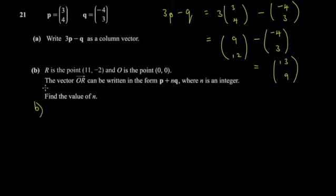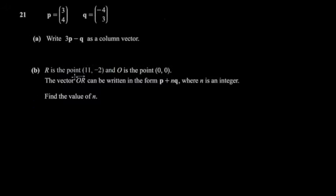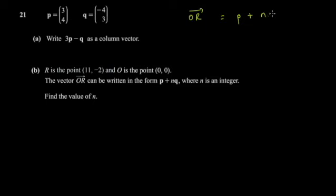For part B, we're not told a specific value, so let's clear the space. Here we have a point R, and the vector OR can be written in a form involving an integer n. So OR equals p plus n times q.